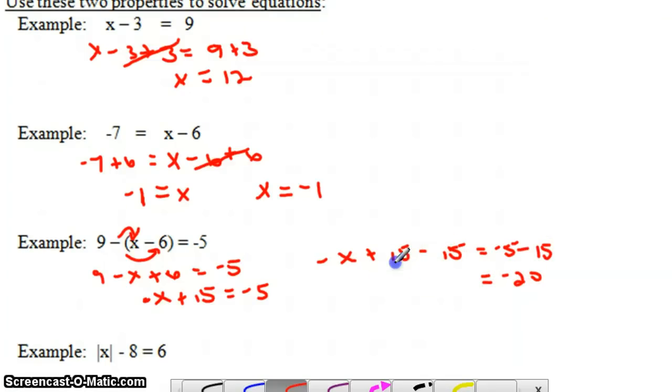The plus 15 and minus 15 are inverse operations, so they cancel out. We have negative x equals negative 20. But we don't want negative x, we want x. This says the opposite of our answer is negative 20, which means our actual answer is positive 20.